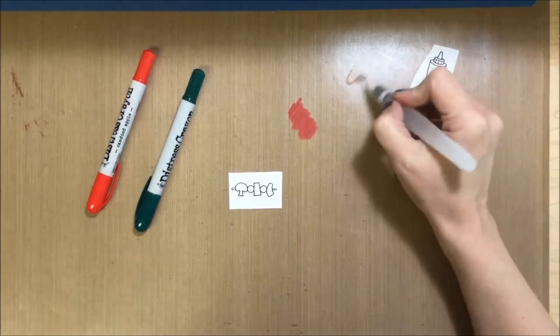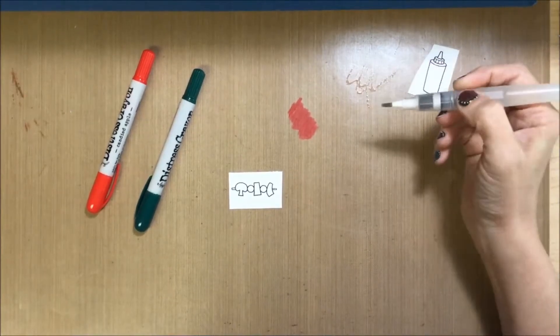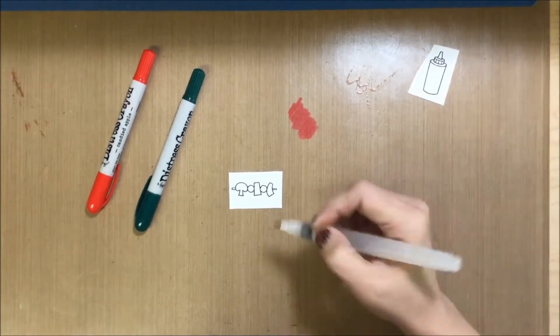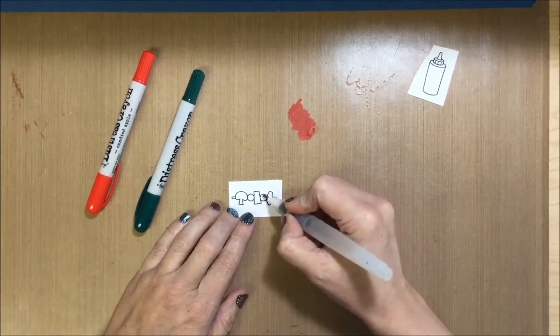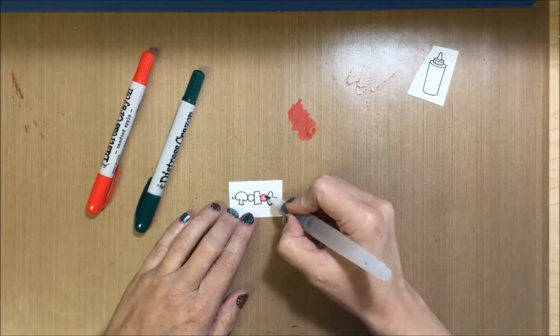This is my water brush primed and ready to go and you know it's primed because there's water coming out of it. So the first thing I would do is just pick up a little bit of color and I would just fill in the circle.